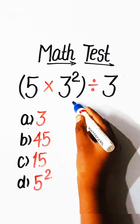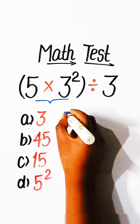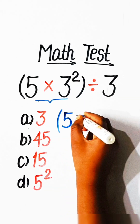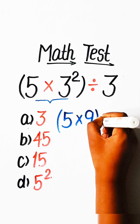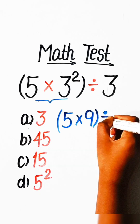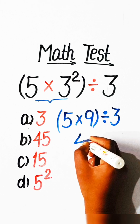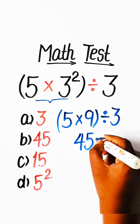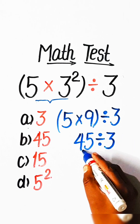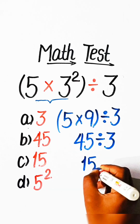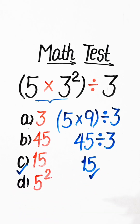In order to solve this we have to solve the bracket part first. We write 5 multiply by 9, since 3 squared is 9, divide by 3. Then 9 times 5 are 45, divide by 3. So 5 multiply by 3 is 15, and Option C, 15, will be our correct answer.